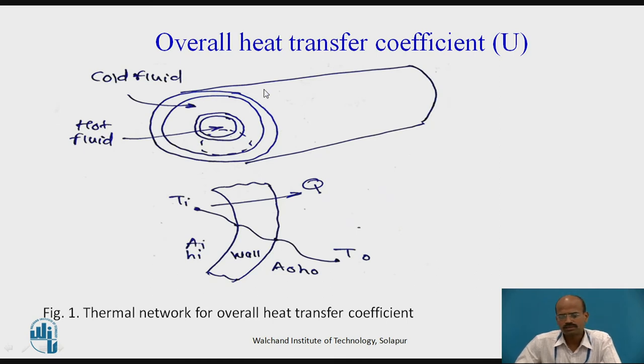There is one concept known as overall heat transfer coefficient, usually denoted by capital U. Here, the example is taken in which this is the inner tube and this is the outer tube. This becomes concentric tube heat exchanger. The transfer of heat through the inner tube takes place by means of convection, conduction and convection to the annular fluid.